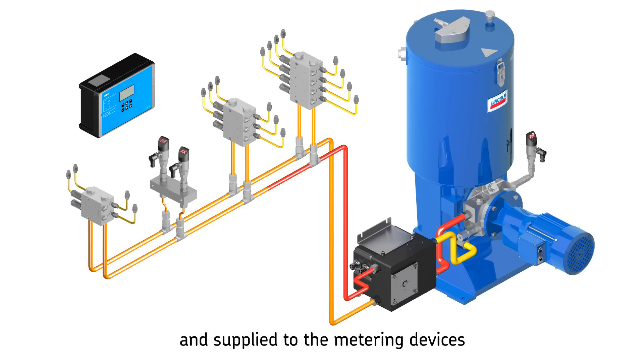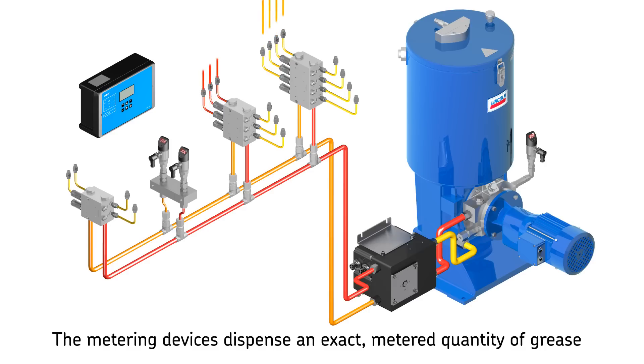The lubricant, which is conducted by the changeover valve, is supplied to the metering devices. The metering device pistons are moved into their adjusted end positions, thus dispensing an exact metered quantity of grease. Once all metering devices have dispensed their lubricant to the consumption point,